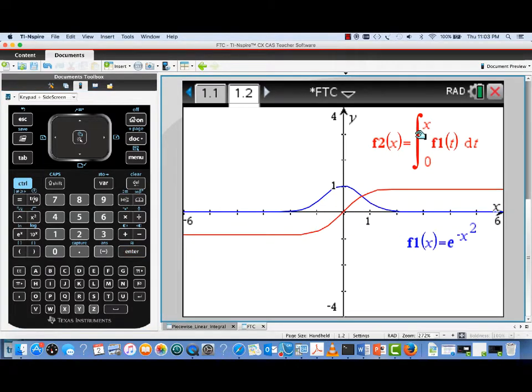Here's our graph of this definite integral function, and we can see that where our original graph was close to zero, our anti-derivative graph has a slope that's close to zero. Where our function has a value of one, our manufactured graph has a slope of one. And again, here where our original function graph is close to zero, our definite integral graph has a slope close to zero.